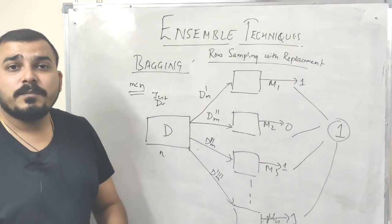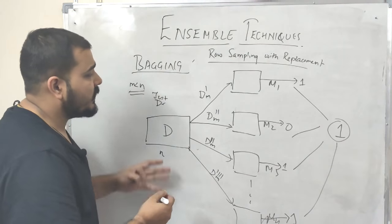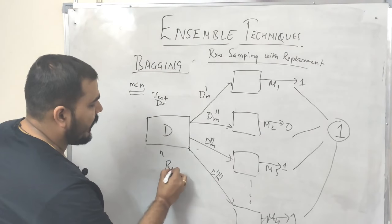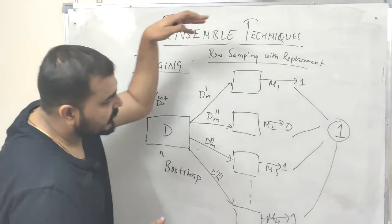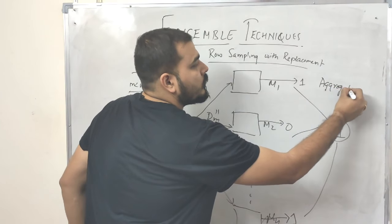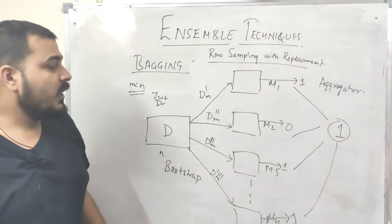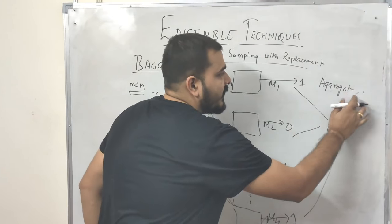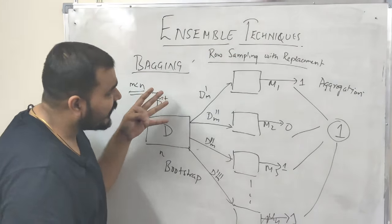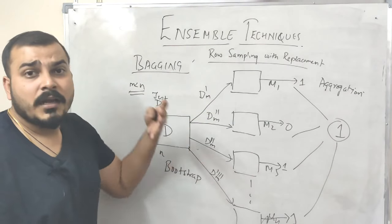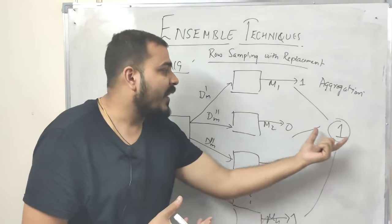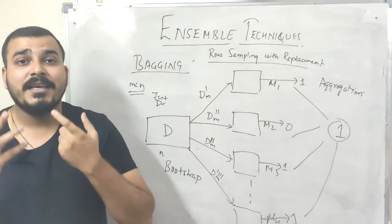Now, bootstrap aggregation means two things. The step where I am using row sampling with replacement — that step is basically called as bootstrap. And finally, by using the voting classifier or majority vote to combine the outputs — that is basically called as aggregation. So bootstrap aggregation means: first, use row sampling with replacement to give different records to each model, the models get trained, and finally we use majority vote to find the output. This is how the bagging technique works.